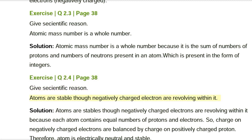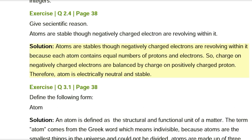Exercise Q2.4, page 38. Give scientific reason: Atoms are stable though negatively charged electrons are revolving within them. Solution: Atoms are stable because each atom contains equal numbers of protons and electrons, so the charge on the negatively charged electrons is balanced by the charge on the positively charged protons. Therefore the atom is electrically neutral and stable.